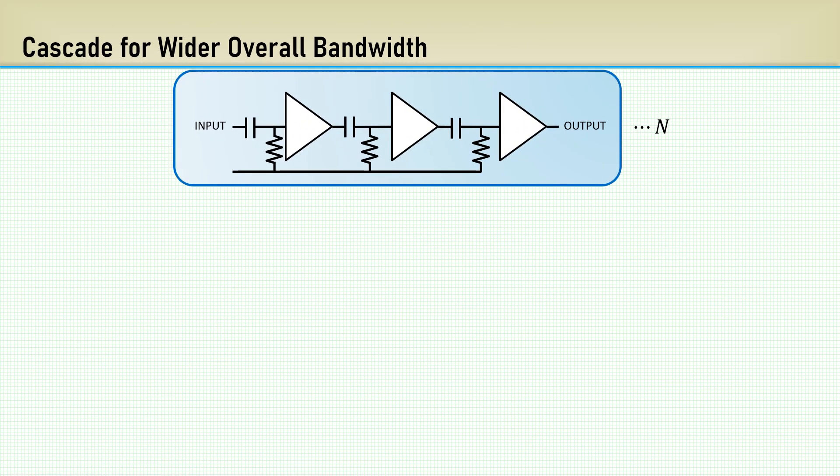No problem. We can connect multiple amplifiers in series, or cascade, with each having a lower gain to get the extra bandwidth. Oftentimes, the amplifiers will have a DC bias when operated on a single supply, which requires capacitive coupling between the stages. This limits the bandwidth at the lower end.